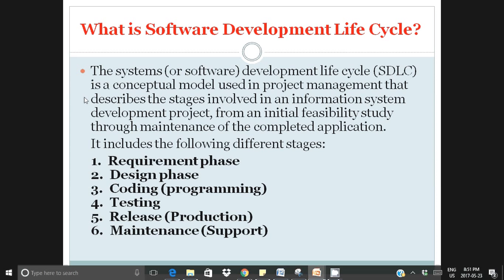That's what Software Development Lifecycle is — six steps, though some people define five or seven depending on how they categorize them. As long as you cover these phases, nothing is wrong. When someone asks you about SDLC: requirements, design, develop, test, release to market, then maintenance and support. It's easy to remember — similar to building a house: you plan how you want it, design it, workers build it, quality testers check it, then it goes to market.